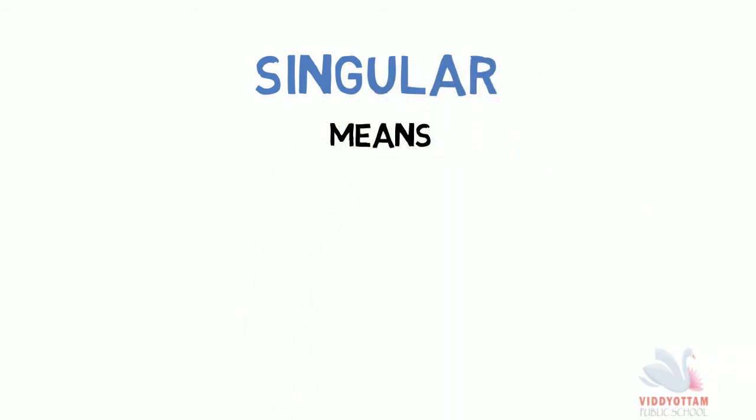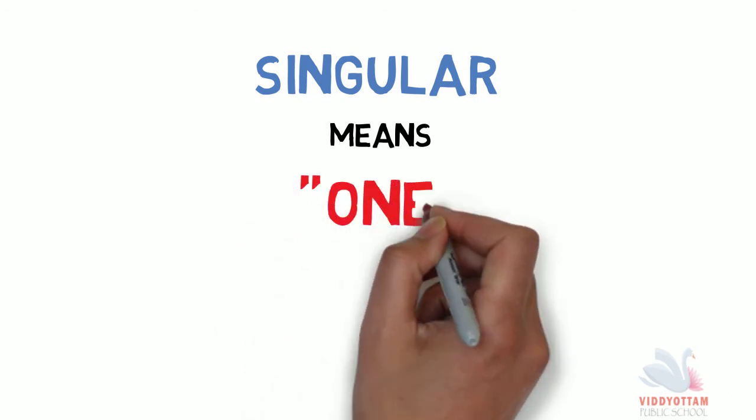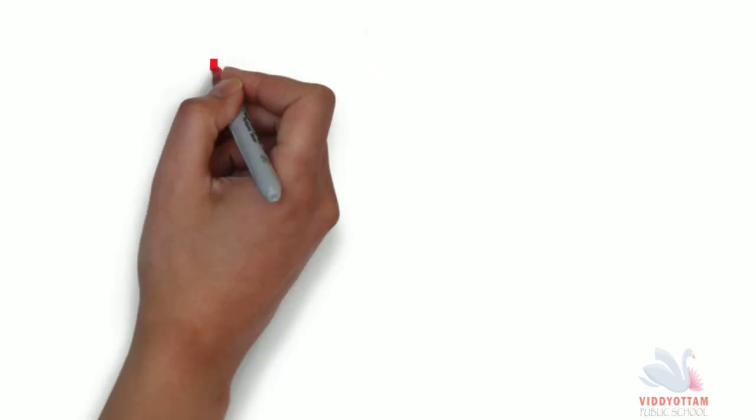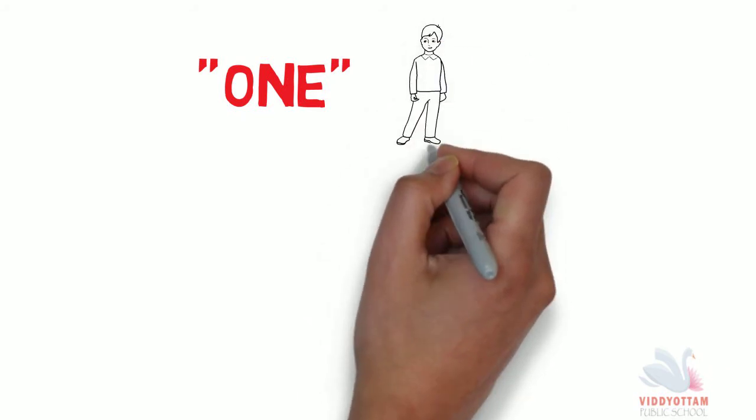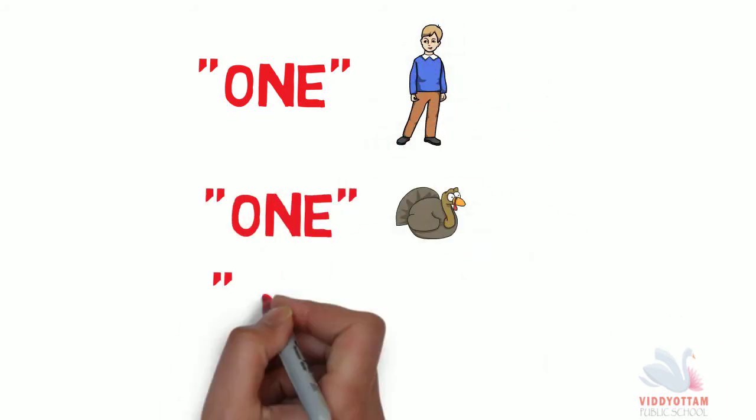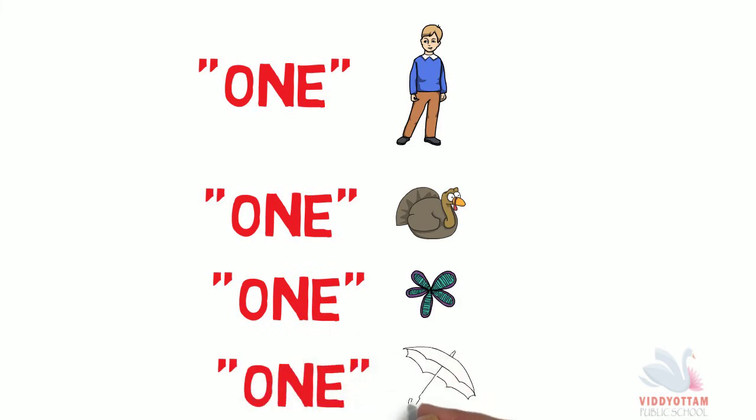The word singular refers to one person, animal, place or thing. So singular means anything that is one in number like one boy, one bird, one flower, one umbrella. When there is one thing or one person or one place or anything that is one in number, that is known as singular.